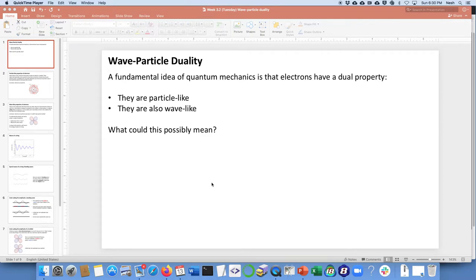Hello, I'm Professor Steven Nesheba and I want to tell you a little bit about wave-particle duality, which is a fundamental idea of quantum mechanics. That is to say that electrons have a dual property. They are particle-like and they are also wave-like. So what could that possibly mean?